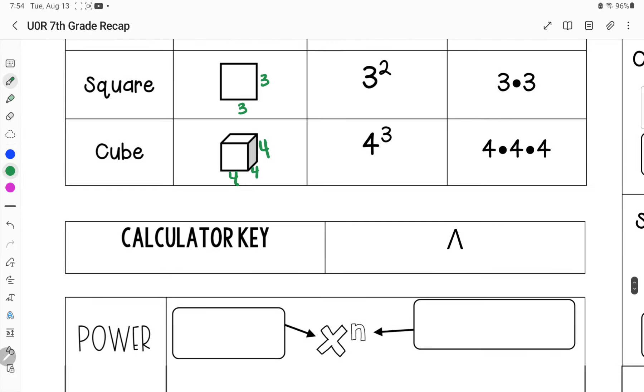You have a calculator key that will do any power, and it looks like this. So this is a power button on your calculator. This would be like six to the fourth power. This right here is how you get that exponent.